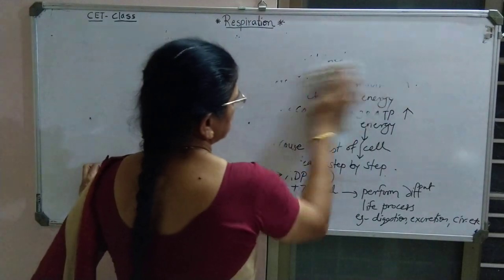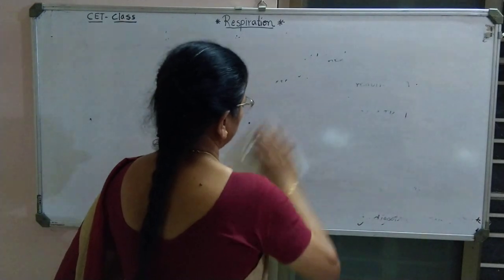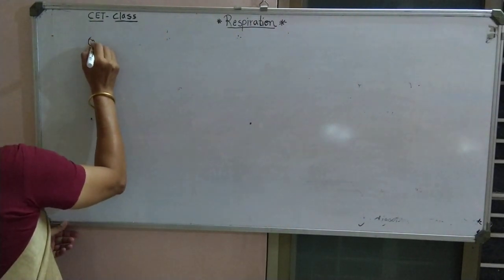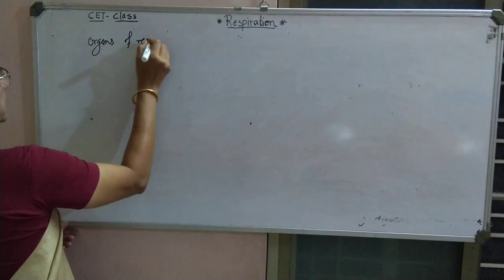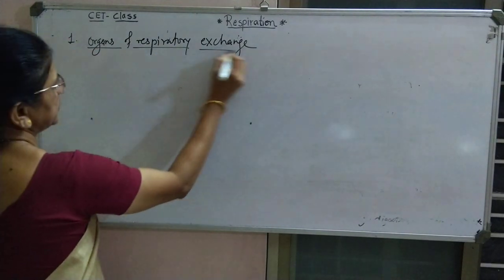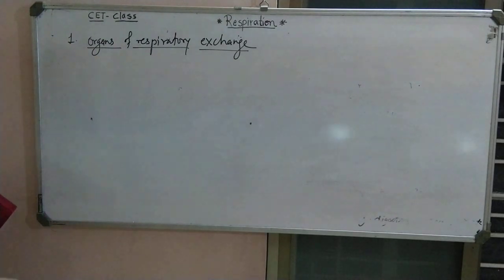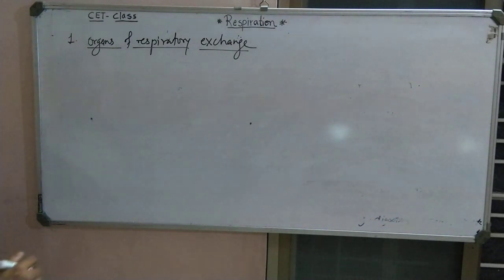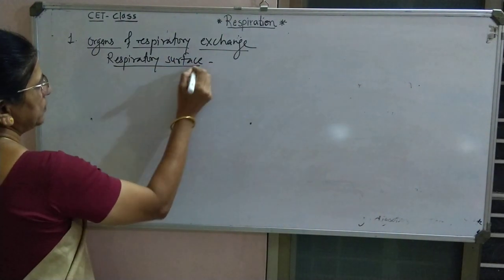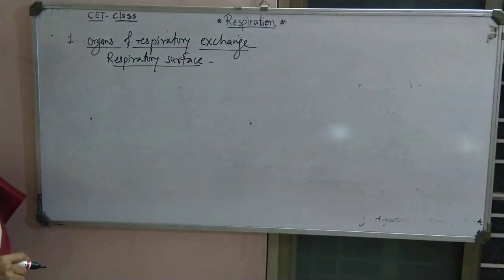Now, in our syllabus, the first point given is organs of respiratory exchange. All living organisms need organs for respiratory exchange, and they are collectively called respiratory surfaces.